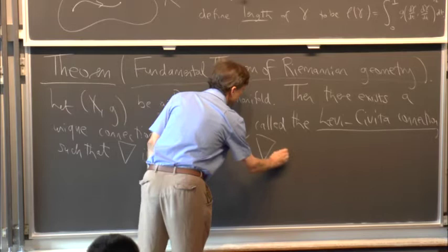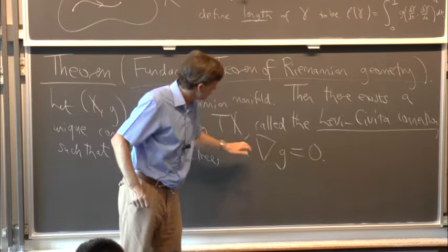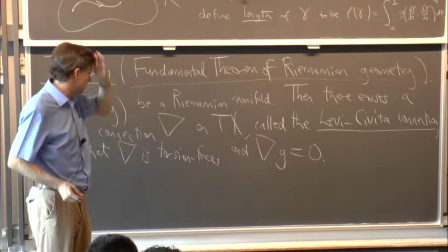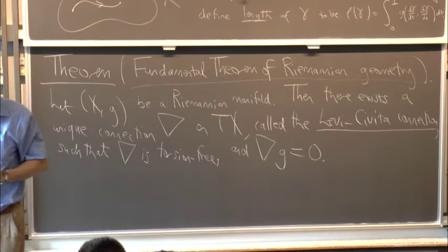The Levi-Civita connection is unique subject to two conditions: firstly, ∇ is torsion-free — a condition which only makes sense for connections on the tangent bundle — and secondly, ∇G = 0. Since a connection on TX induces connections on all tensor bundles and G is a tensor, this makes sense. So when you have a Riemannian manifold, you can differentiate any tensor using the Levi-Civita connection.